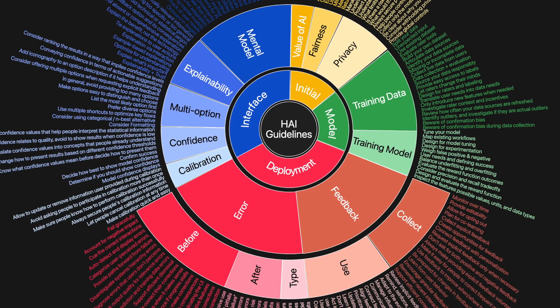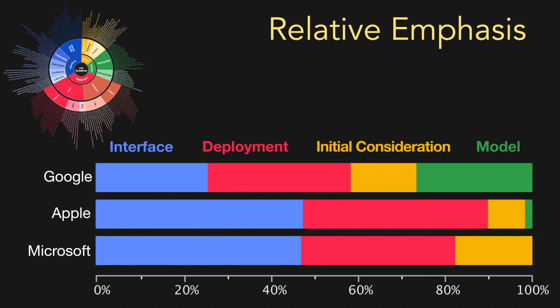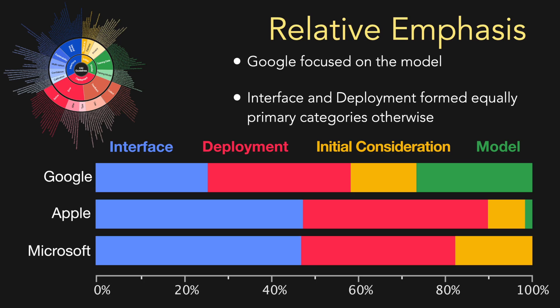After developing this unified structure, we can look back on each individual company's guidelines and compare them within this new context. We calculated the percentage of each company's total guidelines falling within each high- and low-level category to control for the large difference in number of guidelines and see relative emphasis. We found that the largest difference is that Google gave much more emphasis to model considerations — training data and processes — while Apple and Microsoft spent very little or no emphasis specifically on the model. Interface and deployment categories dominated in roughly equal proportions at all three companies.